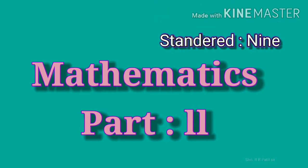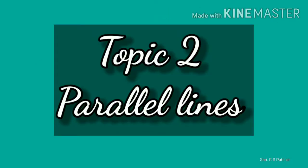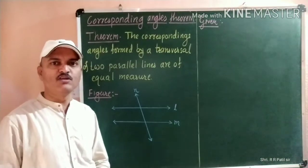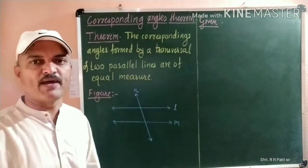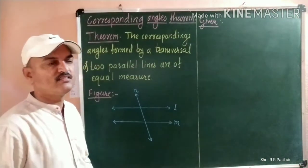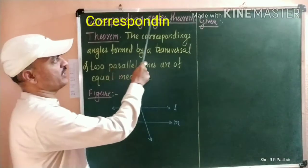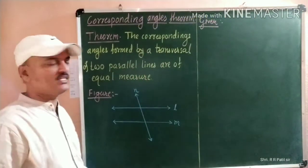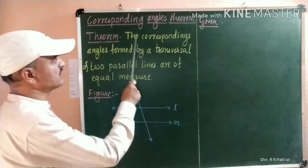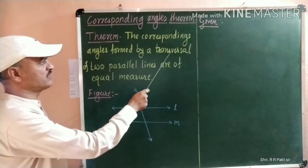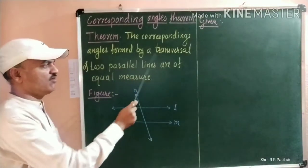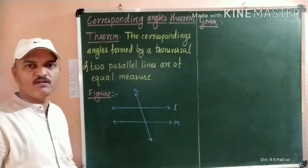Welcome students. Let's learn more about parallel lines. Today we are going to learn the next property of parallel lines. It is also known as the corresponding angle theorem. The statement for that is: the corresponding angles formed by a transversal of two parallel lines are of equal measure.